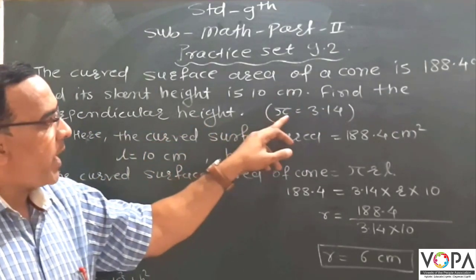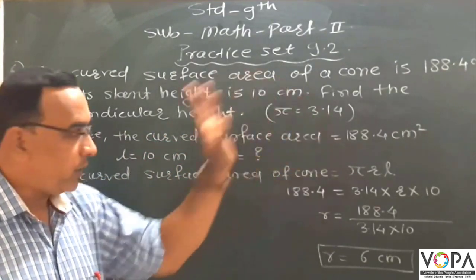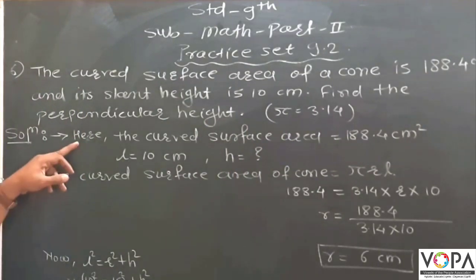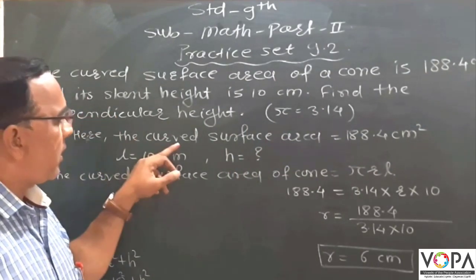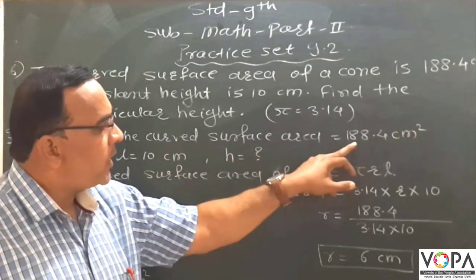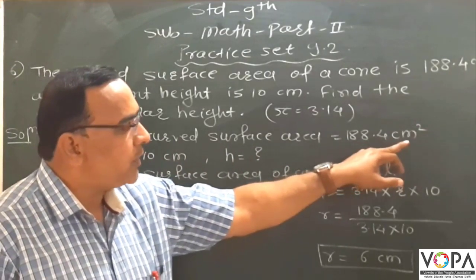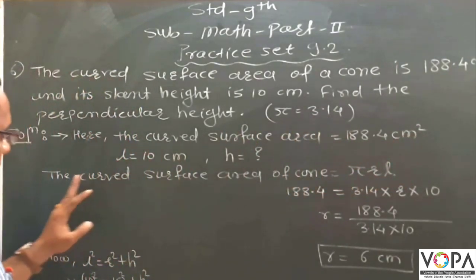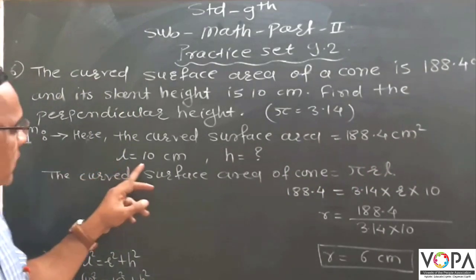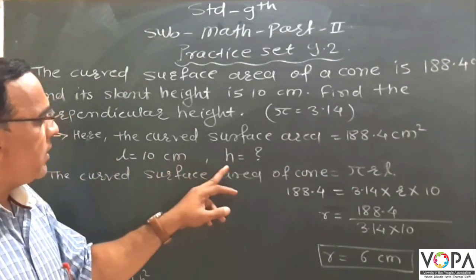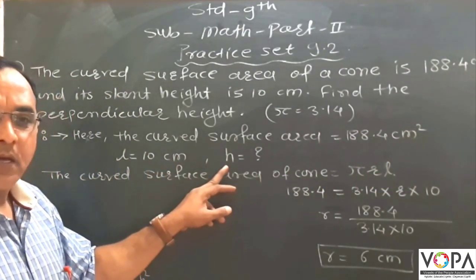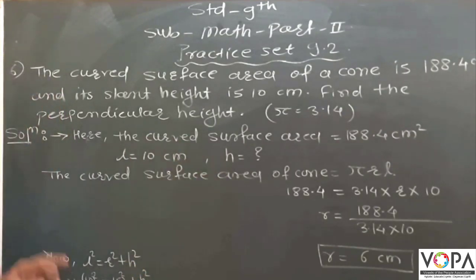Now given, pi is equal to 3.14. Then here, the curved surface area is 188.4 cm² given. Now, l is equal to 10 cm and to find the perpendicular height, that is h.